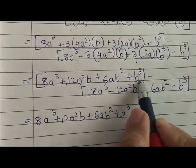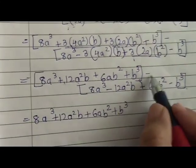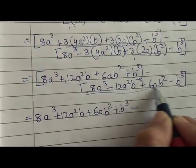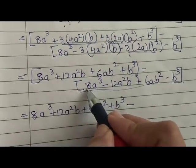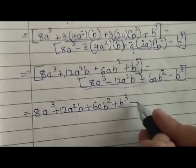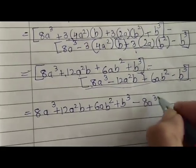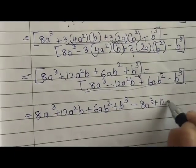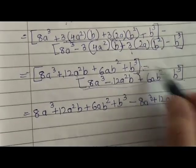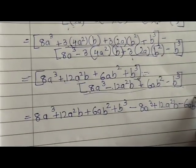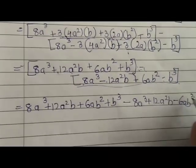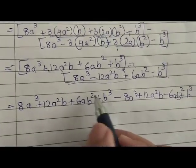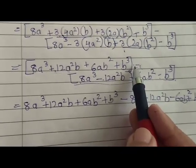Now we have opened this bracket and we put the negative sign here. When you open this whole bracket, the sign will change. So: plus into minus gives minus, so we write -8a³; then minus into minus gives plus, so +12a²b; then plus into minus gives minus, so -6ab²; and minus into minus gives plus, so +b³. This is how we open the bracket when there is a negative sign.